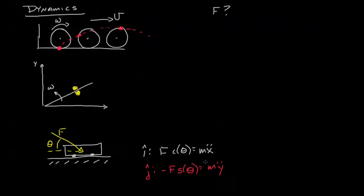Well, we get a negative F sine theta, and we see that equals my double dot. Of course you'd say, well, that's complete nonsense—the thing can't move in the y direction. So what's happening here?